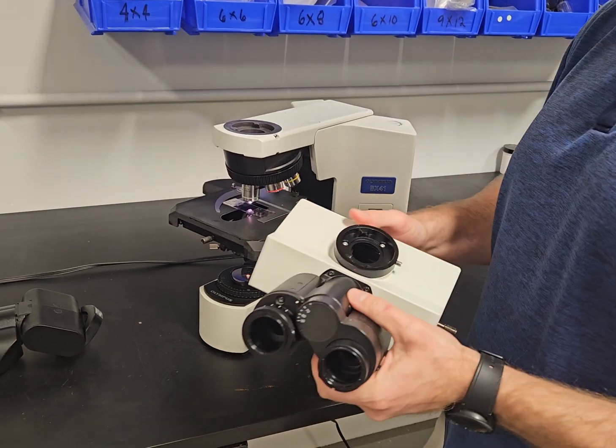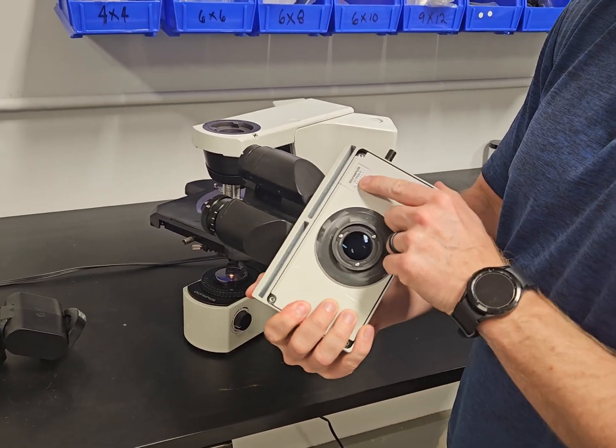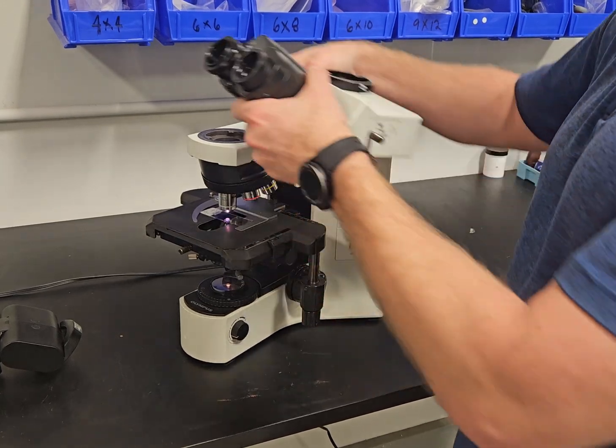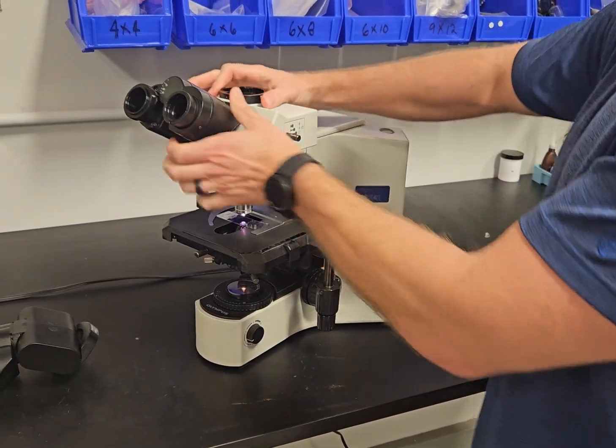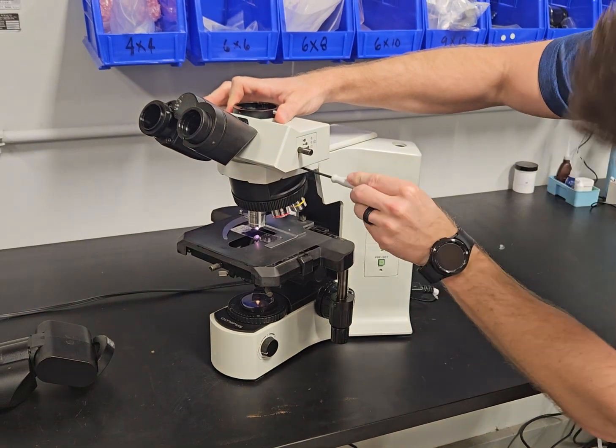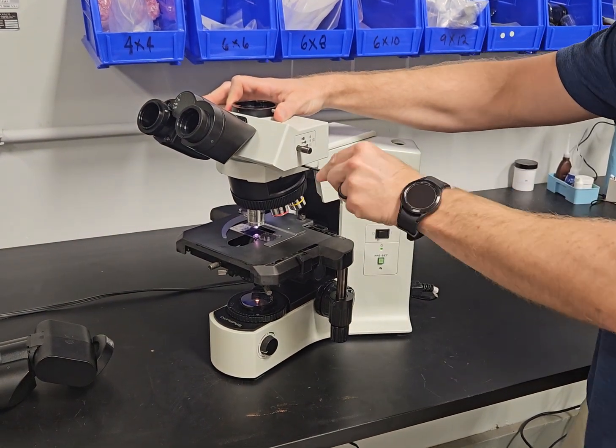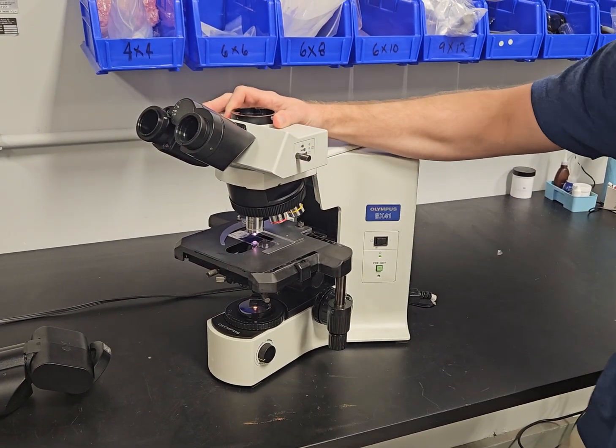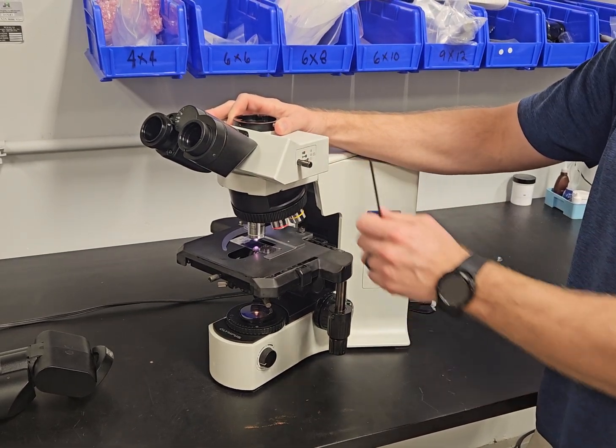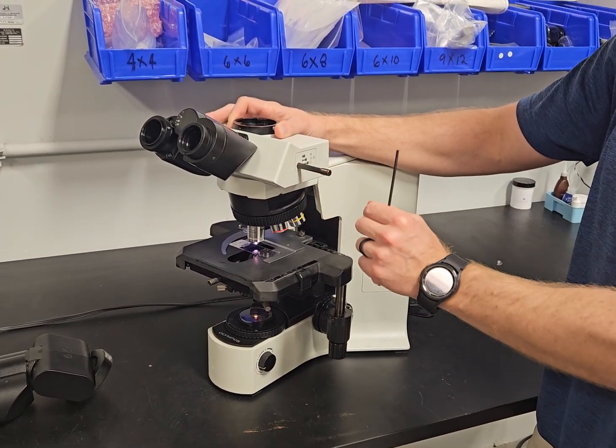This is the trinocular head, the U-TR30-2. This head would go on just like the tilting head. We're going to take the three millimeter Allen wrench, put it on. Never want to take your hand off of the head until you know it's tight and then it has a pull rod on it.